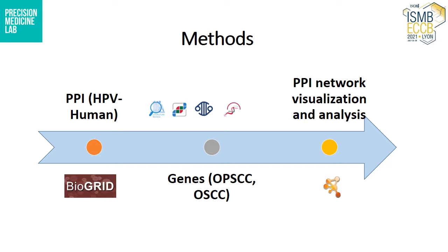First of all, I obtained HPV and human protein-protein interaction data utilizing the BioCrit database, and then identified the key genes for OPSCC and OSCC utilizing different databases. These included GDC-NIH, COSMIC, and CBIO portal. I also did some literature review to identify additional genes. The third step was to use Cytoscape and build a protein-protein interaction network of HPV and human, visualize the OPSCC and OSCC genes in it, and then analyze it.